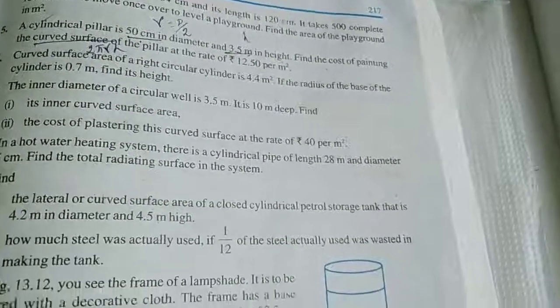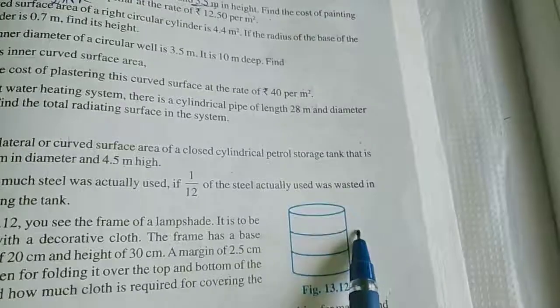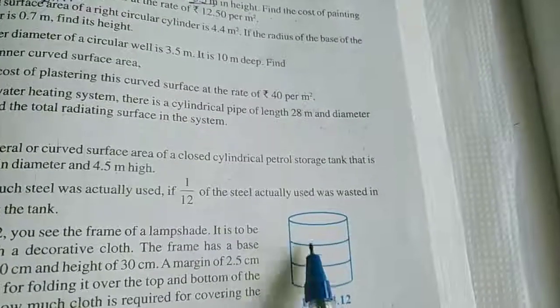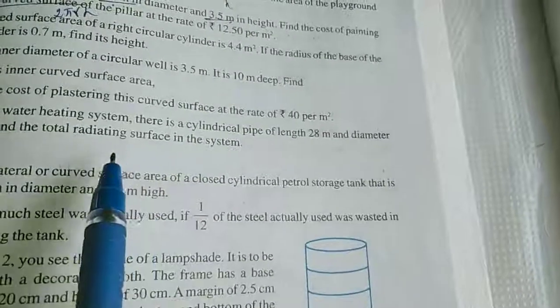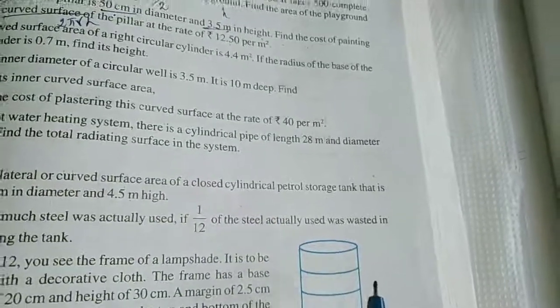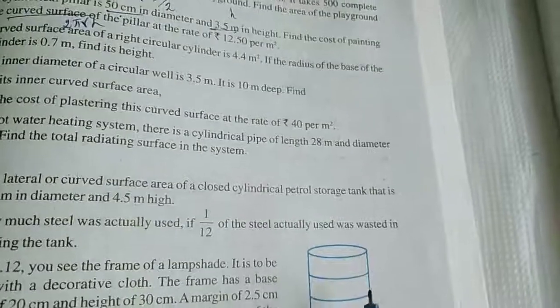If we call it a cylindrical pipe and radiation, the radiating surface, this is a cylinder, which we call curved surface area.